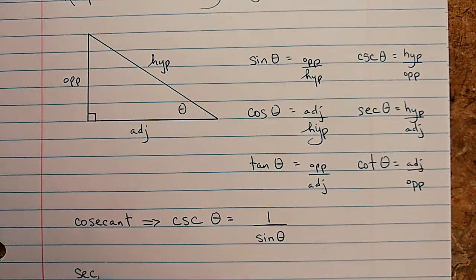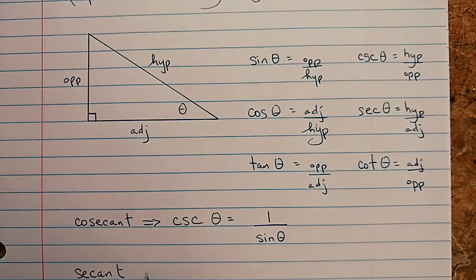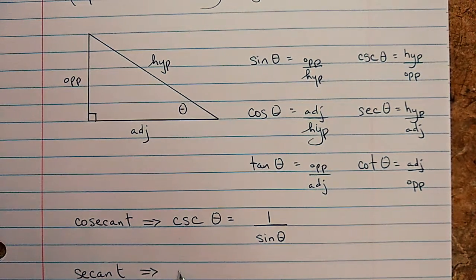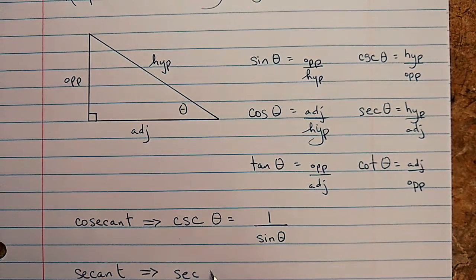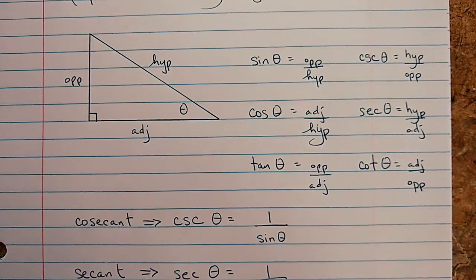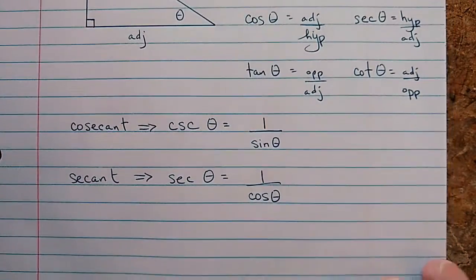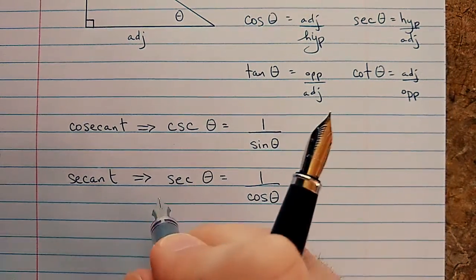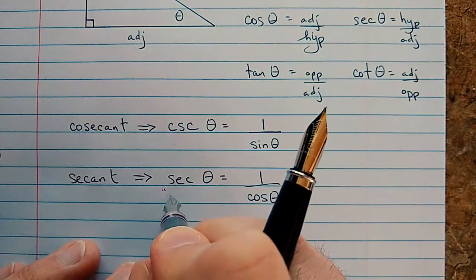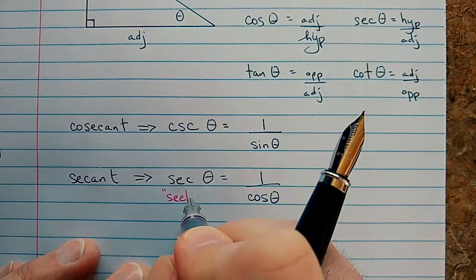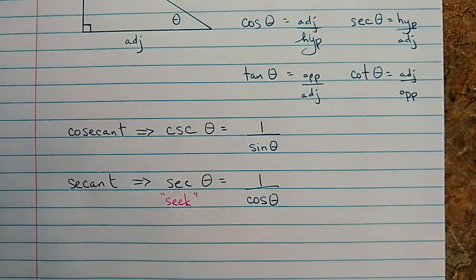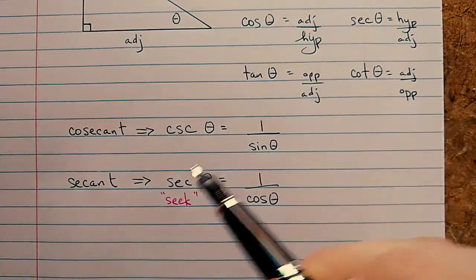Let's write down secant. S-E-C, which is one over the cosine. And I should mention, you can't see that. I should mention that when we say this one, we kind of say the word sec. We say sec theta as a short form for secant.